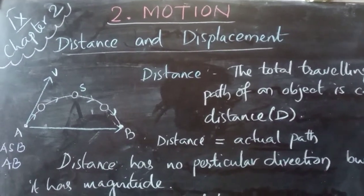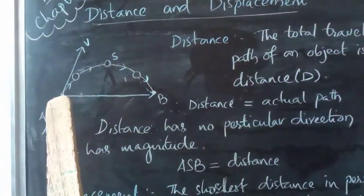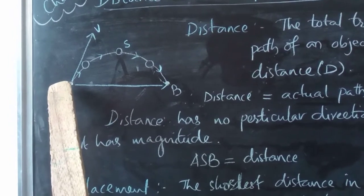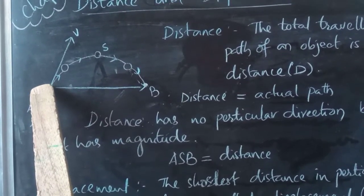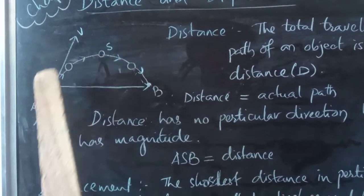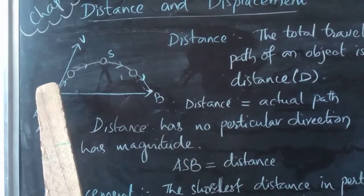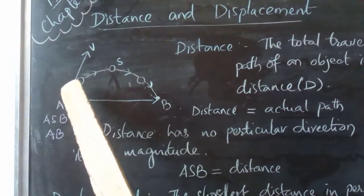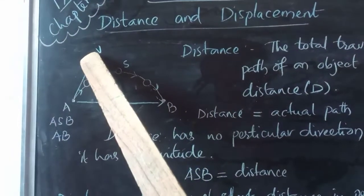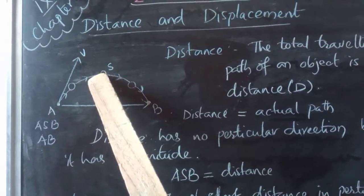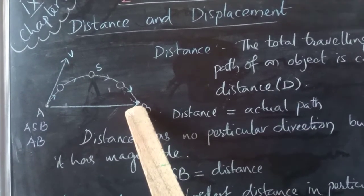First of all: distance and displacement. Take a ball and throw it into the air with some velocity in this direction from point A. Apply an external force with velocity in the upward direction from point A — see how it moves in the air. The ball moves upward, reaches the highest point, and then with the effect of gravitational force it moves down to the ground and reaches point B.